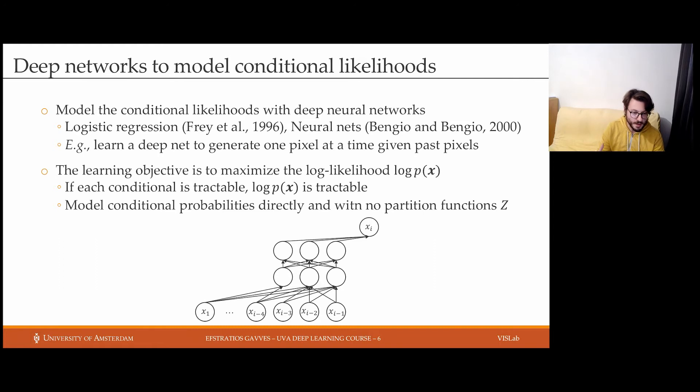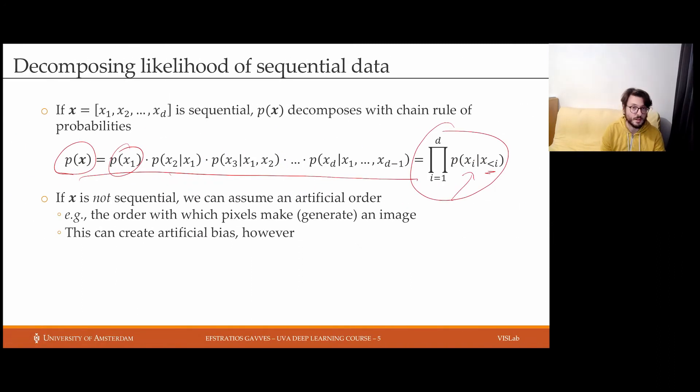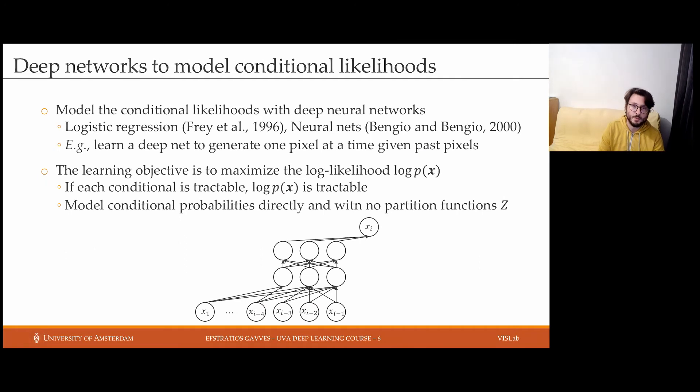The main point here is that when having these conditionals, like these terms in this product, we can model them with deep neural networks. The first attempts were with logistic regression and with neural networks. Nowadays, we could say that we could have a deep neural network learning to generate one pixel at a time given previous pixels. The learning objective is, as usual, maximizing the log-likelihood. And by making sure that each of the conditionals is tractable, so it returns a valid probability, this means that the logarithm of the likelihood is also tractable.